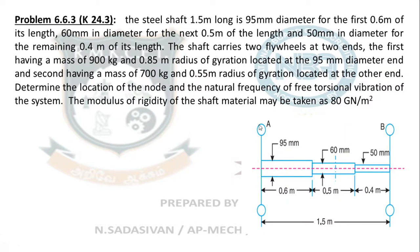Read the question along with the figure. In the last problem we did in the last class, you had only one rotor. Here, this problem has two rotors, rotor A and B. This is one rotor at the left end of the shaft and one more rotor at the right end. The shaft has different diameters. The first step is to convert this shaft into a single-diameter equivalent shaft, then we will solve the problem.